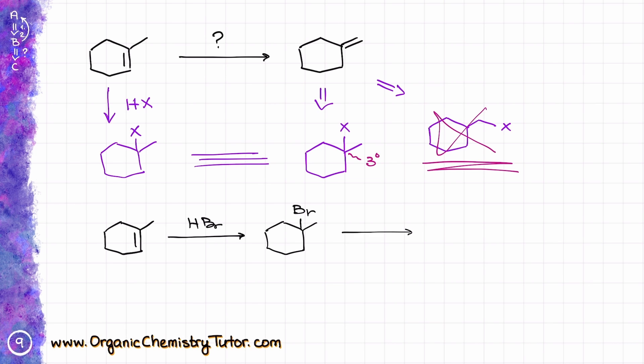Now, in order to get a double bond at the less substituted position, that is the Hofmann double bond, I need to use a bulky base. So I can use something like potassium tert-butoxide, or maybe LDA, or something like that.